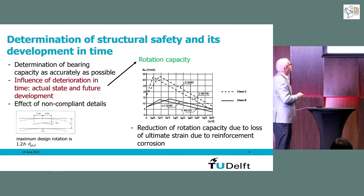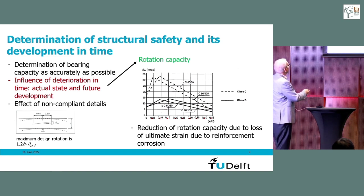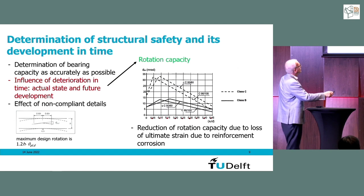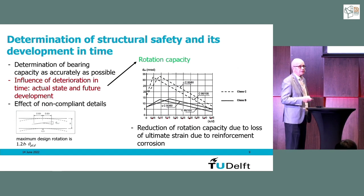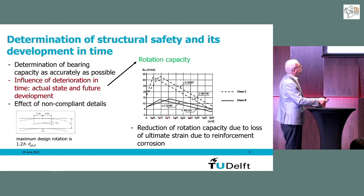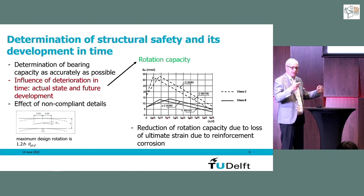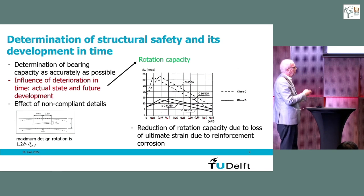For rotation capacity in statically indeterminate systems, the Model Code 2010 and Eurocode define an area of maximum allowable rotation. In the diagram, the dotted line represents class C ductility with an ultimate strain of 7.5 percent, and the more moderate class has five percent. If you have corroded reinforcement — for instance in a parking house where chlorides pass through cracks — you have a reduction of rotation capacity, which has an immediate effect on bearing capacity. You can find your applicable line using the ultimate strain, or new lines may need to be developed.